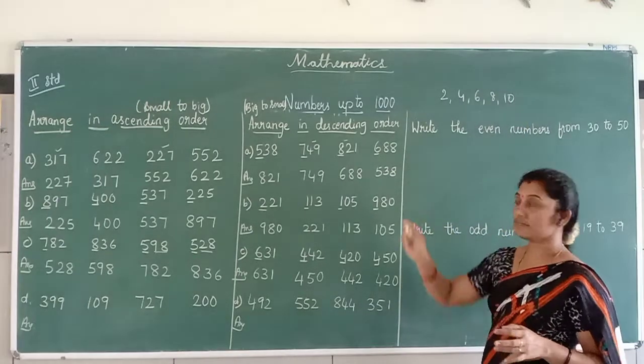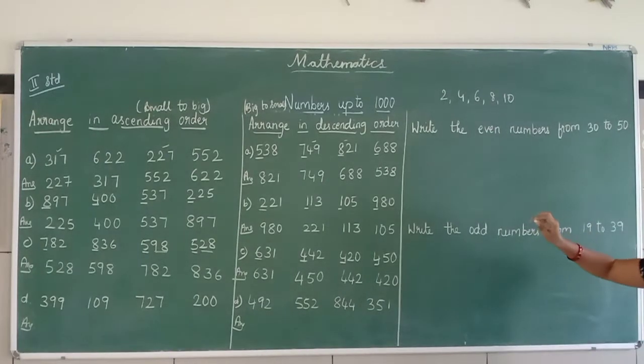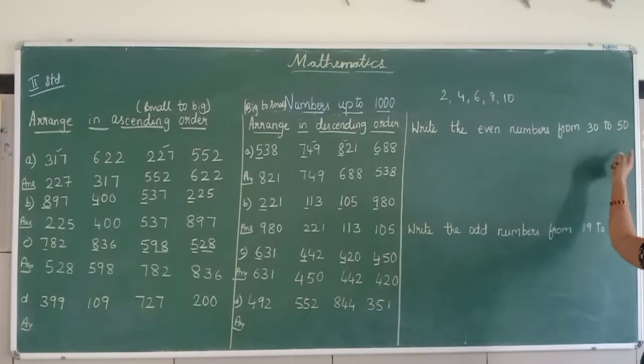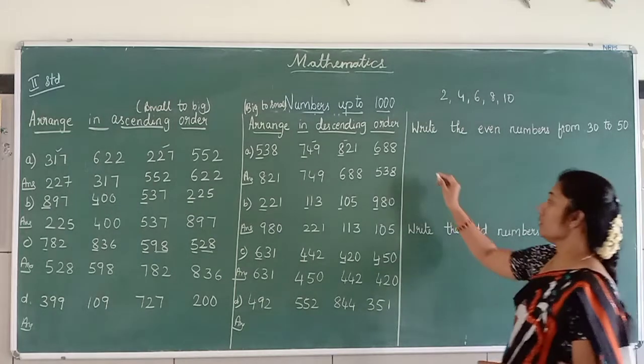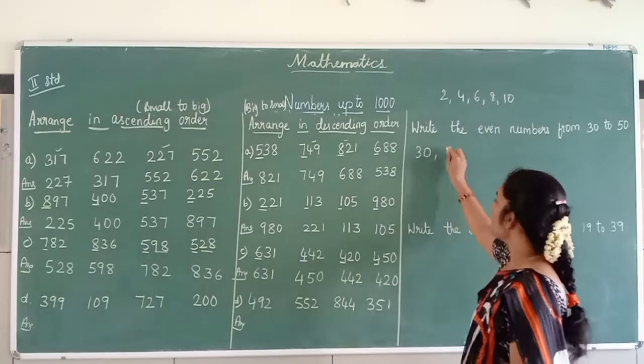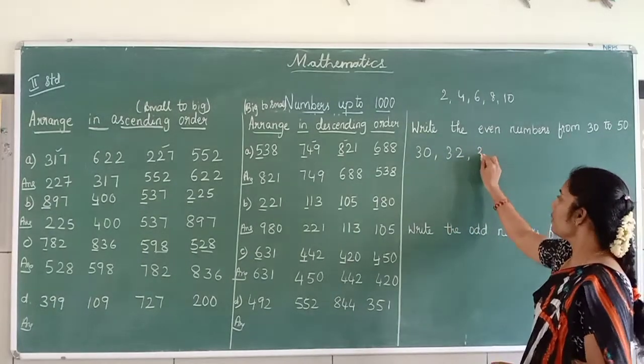As I said you, pairing number always starts from 2, 4, 6, 8, 10. Your even number starts from 2, 4, 6, 8, 10. Now in your textbook it has given that, write the even number from 30 to 50. So 30 is a paired number. After 30, 32, we should leave one number.